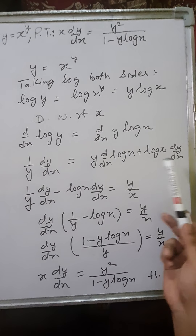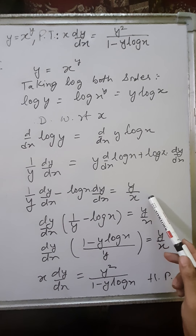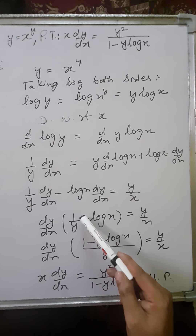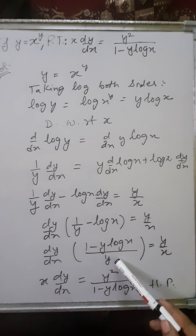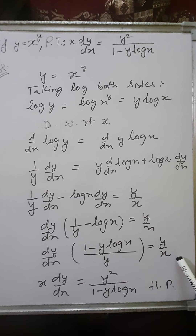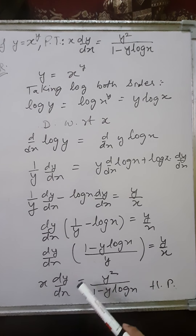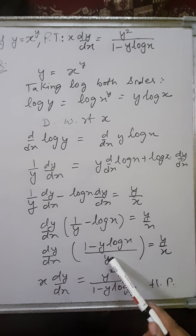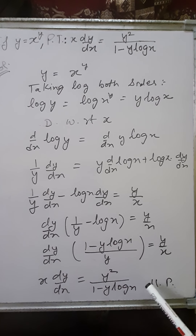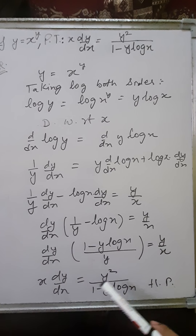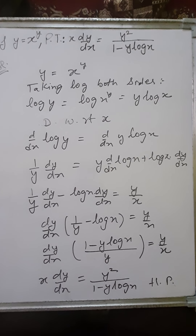We have dy/dx on both sides, so we transfer the log x dy/dx term to the left side: 1/y dy/dx minus log x dy/dx equals y/x. Taking dy/dx common: dy/dx times (1/y − log x) equals y/x. Taking LCM: dy/dx times (1 − y log x)/y equals y/x. Cross-multiplying, x dy/dx equals y times y / (1 − y log x) equals y² / (1 − y log x). Hence proved: x dy/dx equals y² / (1 − y log x).